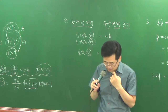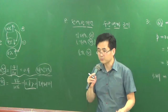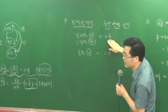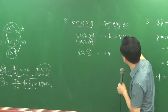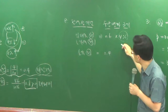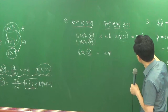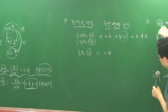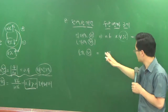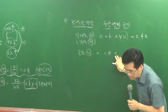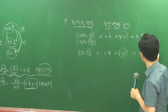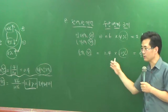임대료가 4% 상승하고요. 소득이 10% 증가한다고 되어 있죠. 그러면 임대료가 4% 상승한다는 얘기는, 임대료의 0.6배만큼 변하니까 곱하기 4% 하면 되는 거예요. 임대료의 0.6배만큼 변하니까 임대료 변하는 걸 그냥 곱하기만 하면 이게 바로 2.4% 이게 수요량 변한다는 얘기죠? 그냥 곱셈만 하면 돼요. 그 다음에 소득의 0.4배 변하는 거죠. 소득이 10% 증가한다고 그랬죠? 그러면 4% 변할 거 아니에요.